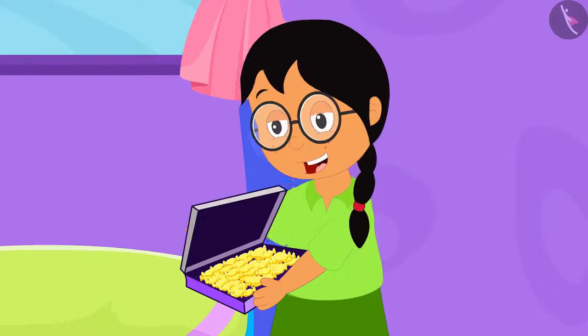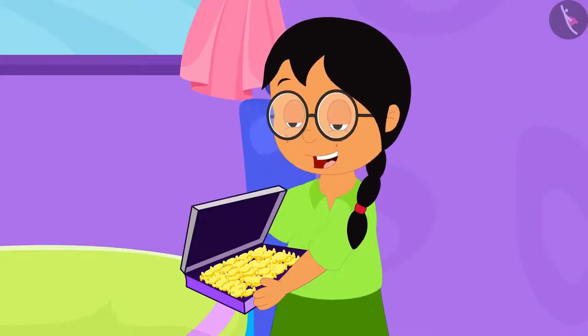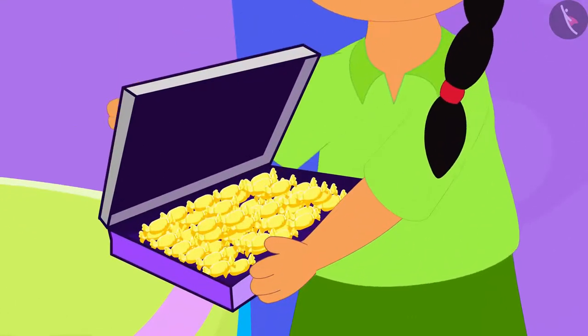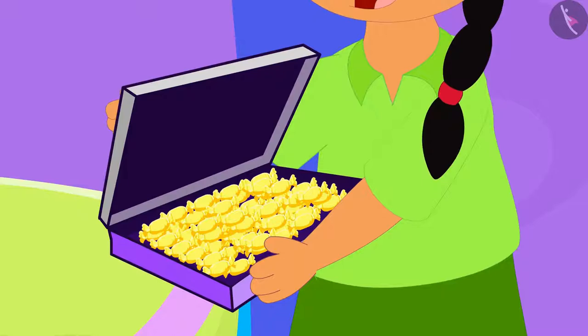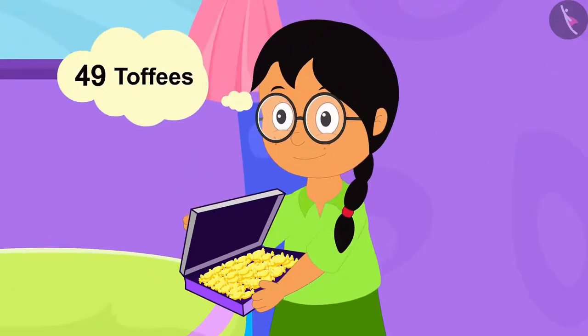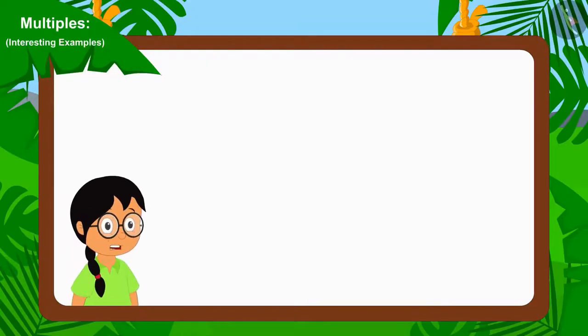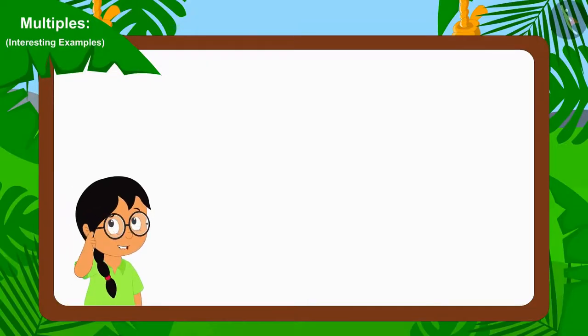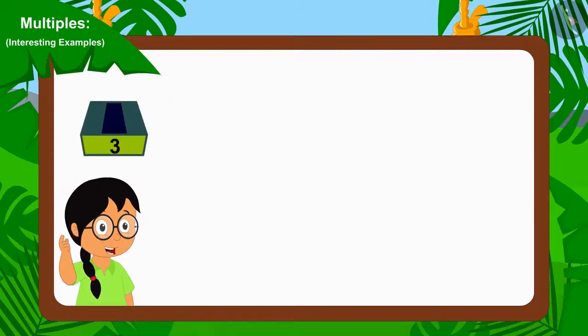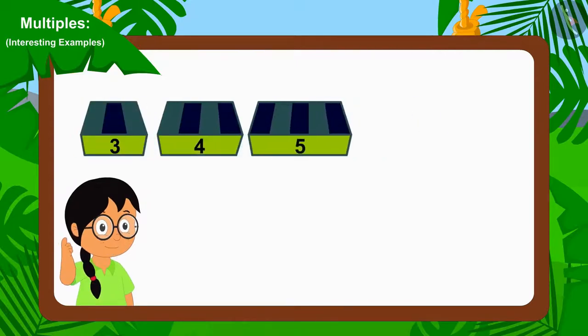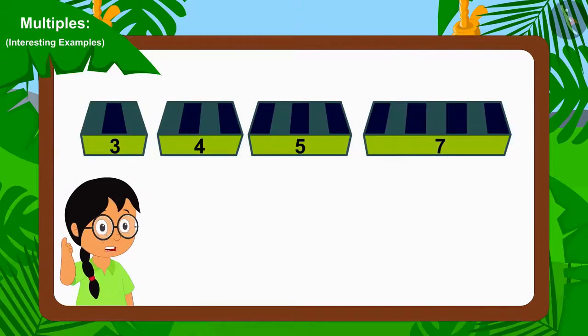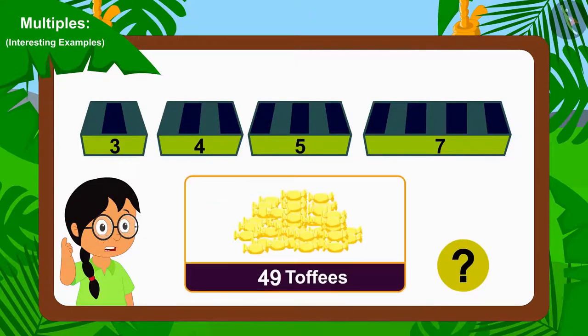First, Meenu opened a packet of pineapple toffees brought by her uncle. It has a total of 49 toffees. Now, Meenu is thinking which one out of the groups of 3, 4, 5, or 7 should she use so that all the toffees are distributed equally.